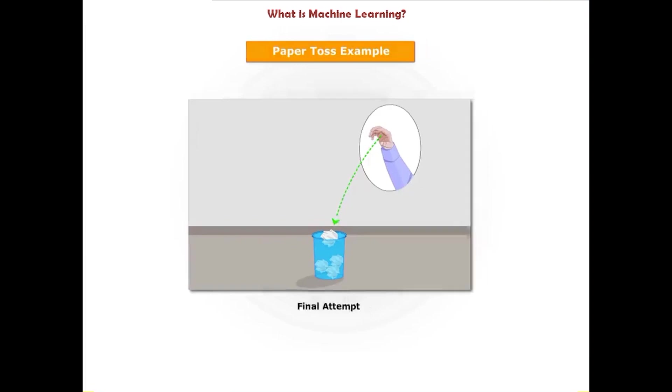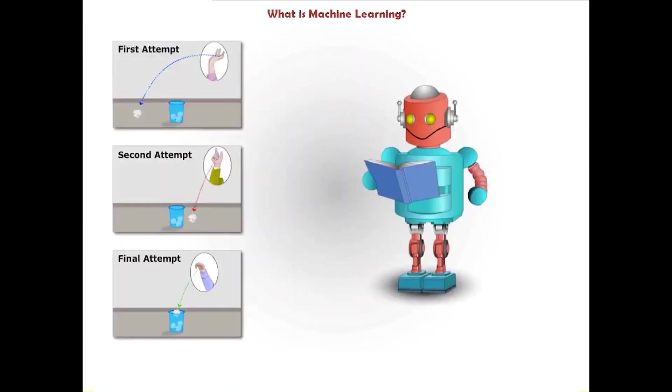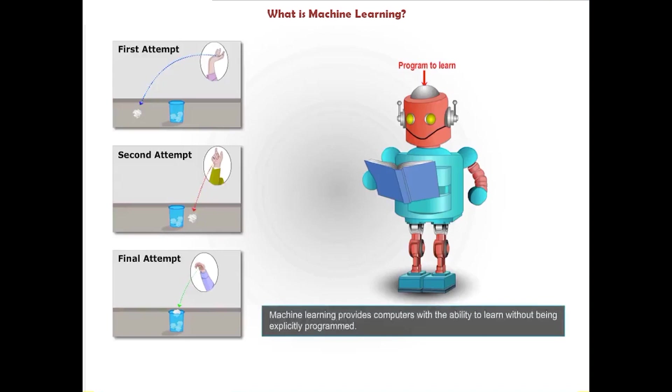You can do something similar with machines too. You can program a machine to learn from every attempt or experience or data point and thereby improve the outcome. By definition, machine learning provides computers with the ability to learn without being explicitly programmed.